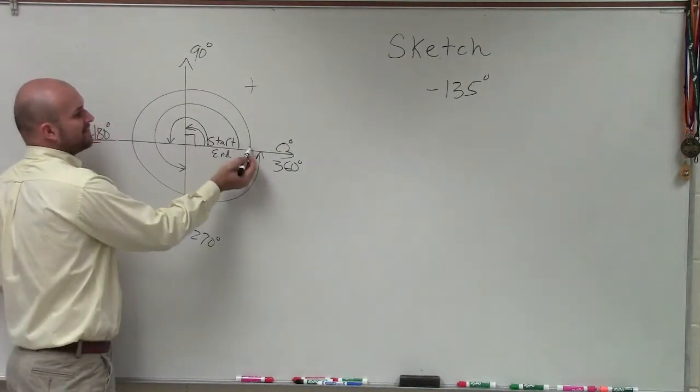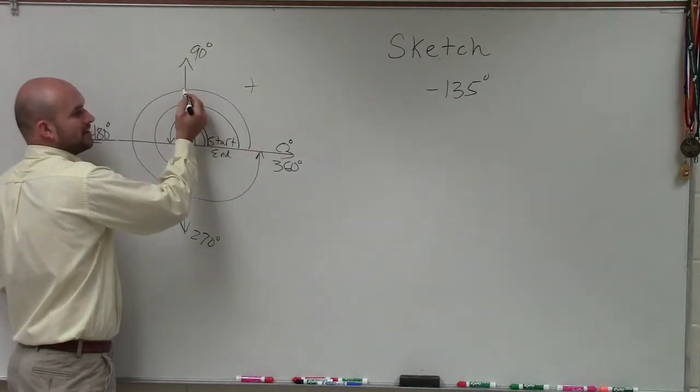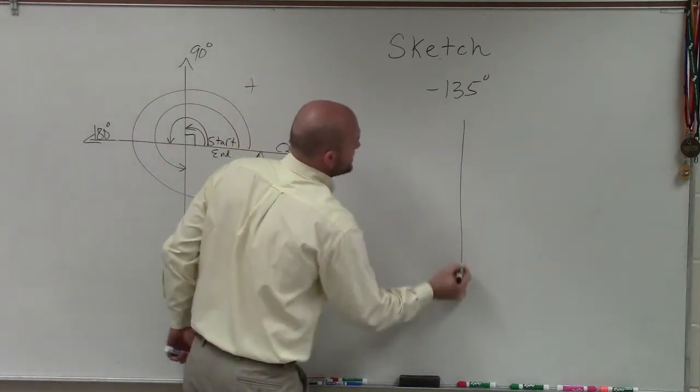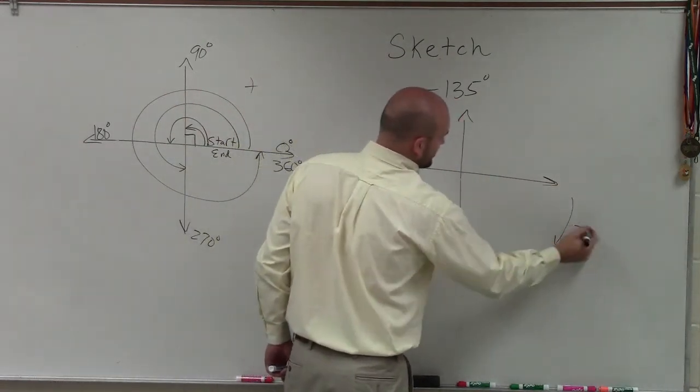But it's important for us to understand that if I start at my initial side for my standard formula, and I go to the first point, that's going to be 90 degrees, and then I'm at 180. So I know that when I'm sketching in my negative angle, I know I'm going now in the negative direction, right?